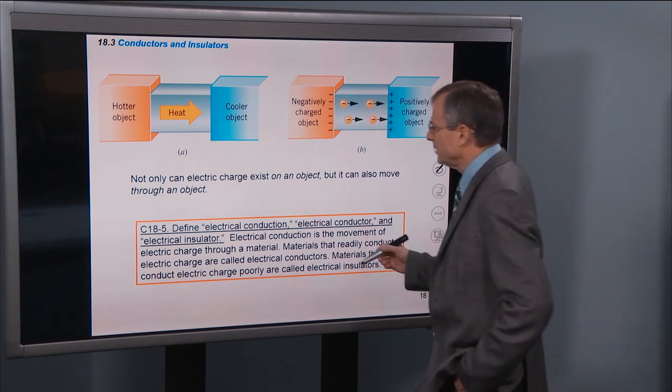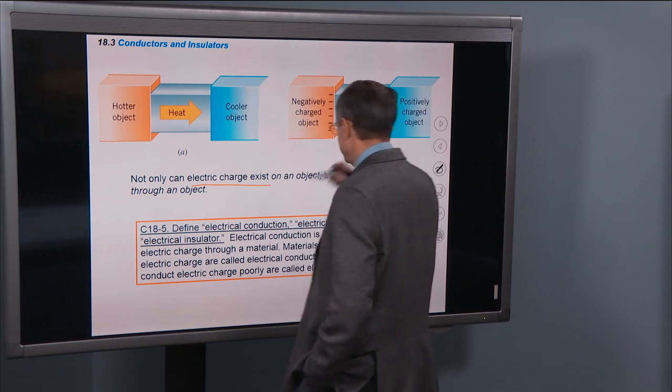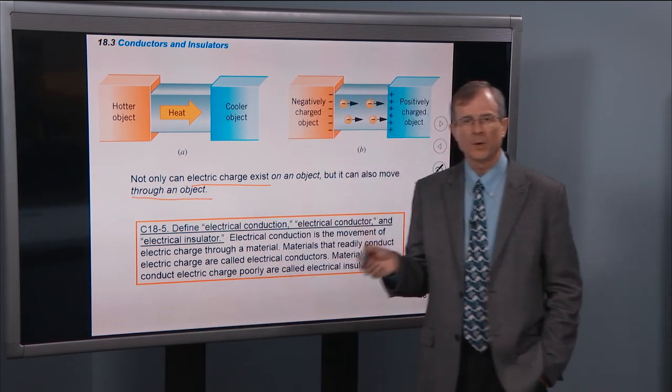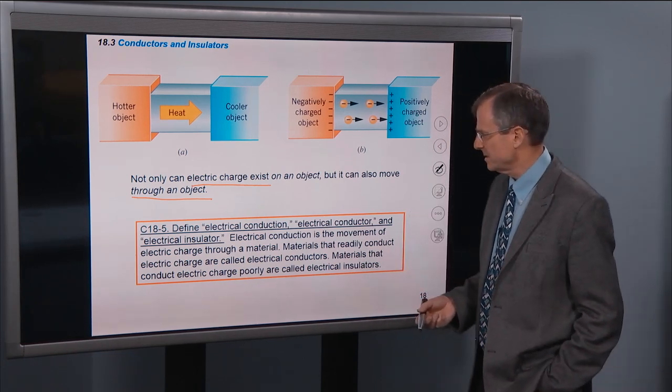So not only can electric charge exist on an object, but it can also move through an object and from one object to another, as shown in the previous section.